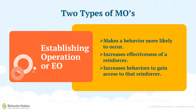There are two types of motivating operations. The first is an establishing operation. This will make a behavior more likely to happen — it will increase the effectiveness of a reinforcer at that time, and thus the behaviors that have been used to gain access to that reinforcer will increase. For example, if it has been a long time since your child has eaten, behaviors associated with receiving food in the past will happen more frequently. Further, the use of food as a reinforcer will be more effective than if your child had just eaten.